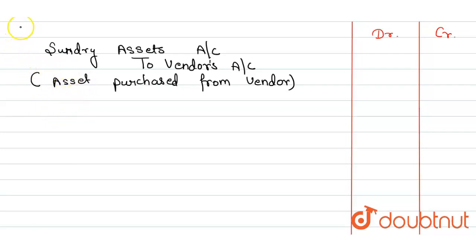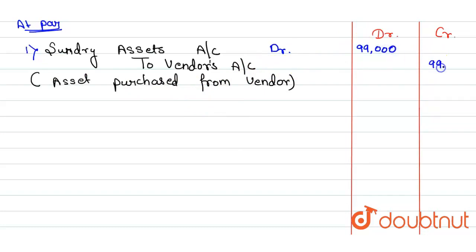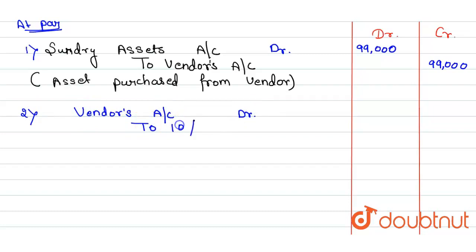The first entry will be: Sundry Assets Account debit to Vendor's Account. Asset purchased from vendor at book value for Rs. 99,000.